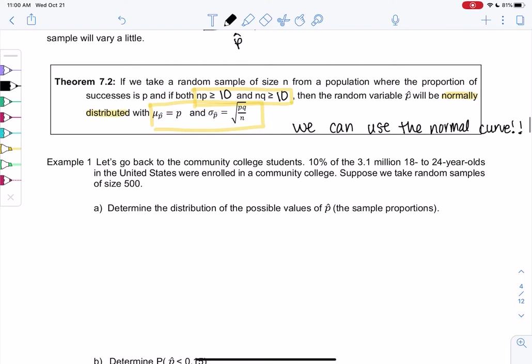So let's go back to that community college example. So 10% of all of the 3.1 million 18 to 24 year olds, that was p is 0.10, enrolled in community college. So that was my success. And so we'll take random samples of size 500 this time. So n equals 500. What's the distribution of the proportions, p-hat? Distribution is shape.